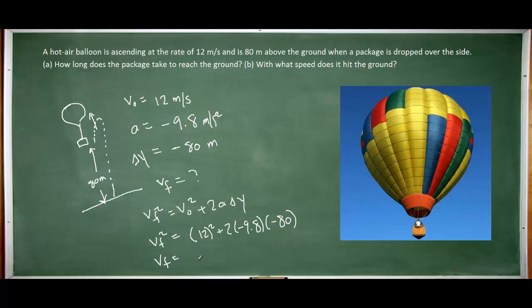But we have to be aware that the package is moving downward as it's striking the ground, so its velocity must be negative at that point. You should have calculated -41.4 meters per second.